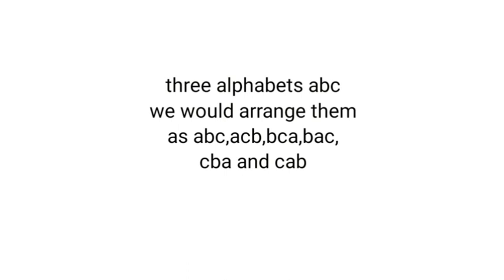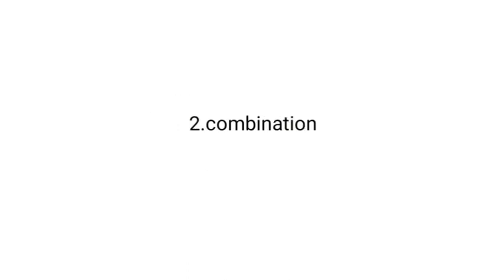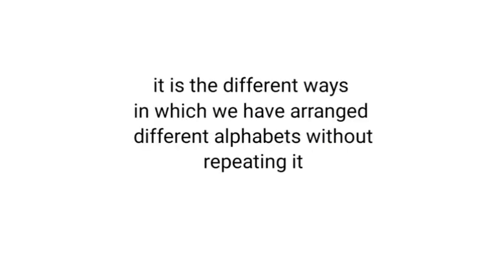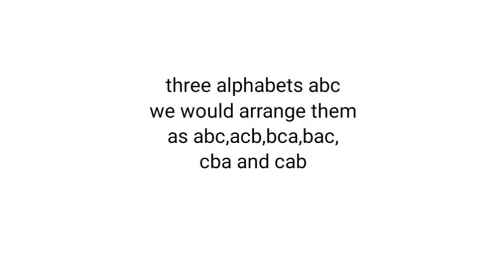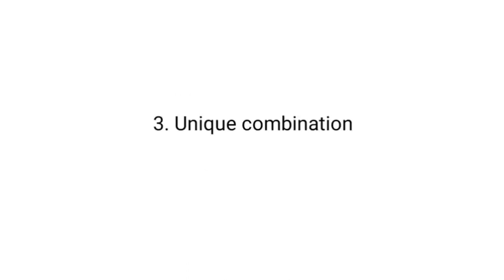CBA and CAB can be classified as the C group. Next is combination. Combination can be defined as the different ways in which we can arrange some alphabets. Taking three alphabets A, B, C — we have six combinations: ABC, ACB, BCA, BAC, CBA, and CAB. ABC and ACB are the first group combination, BCA and BAC are the second group combination, and CBA and CAB are the third group combination.